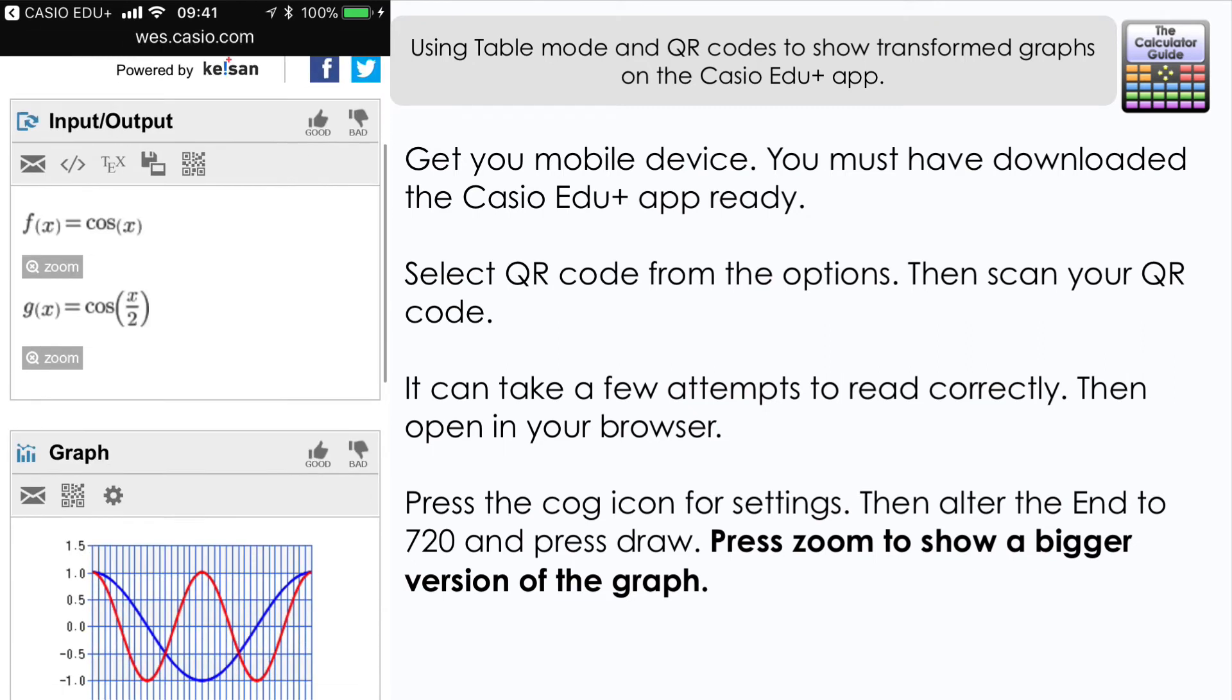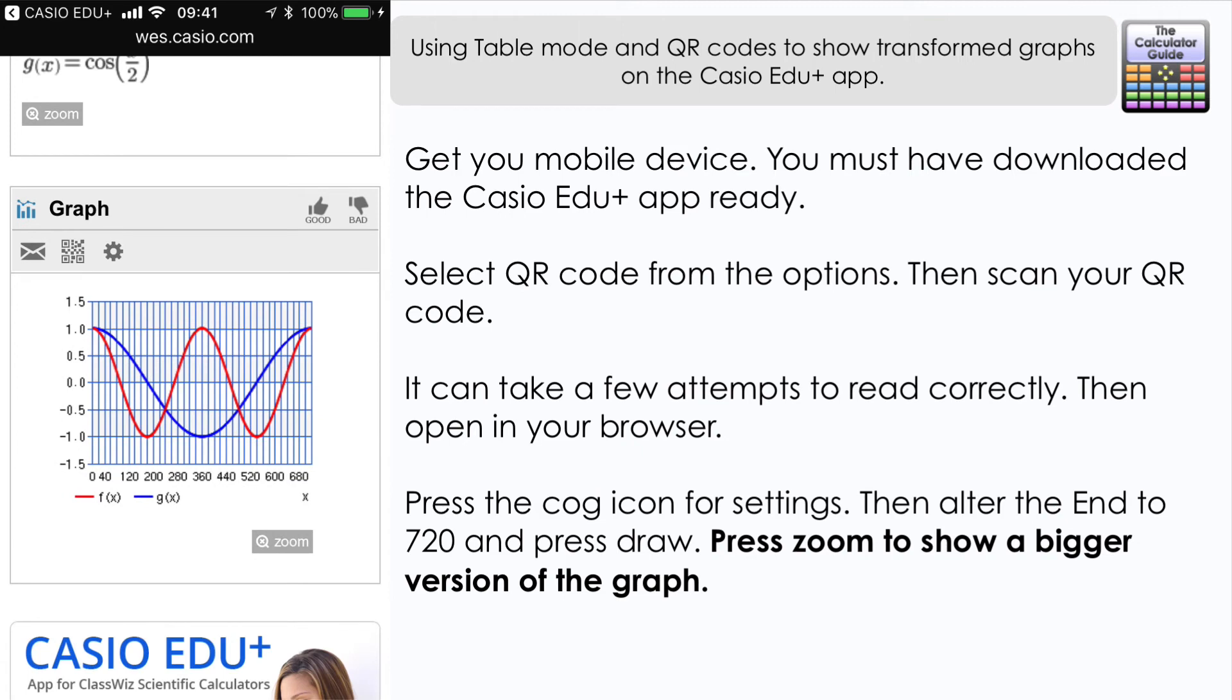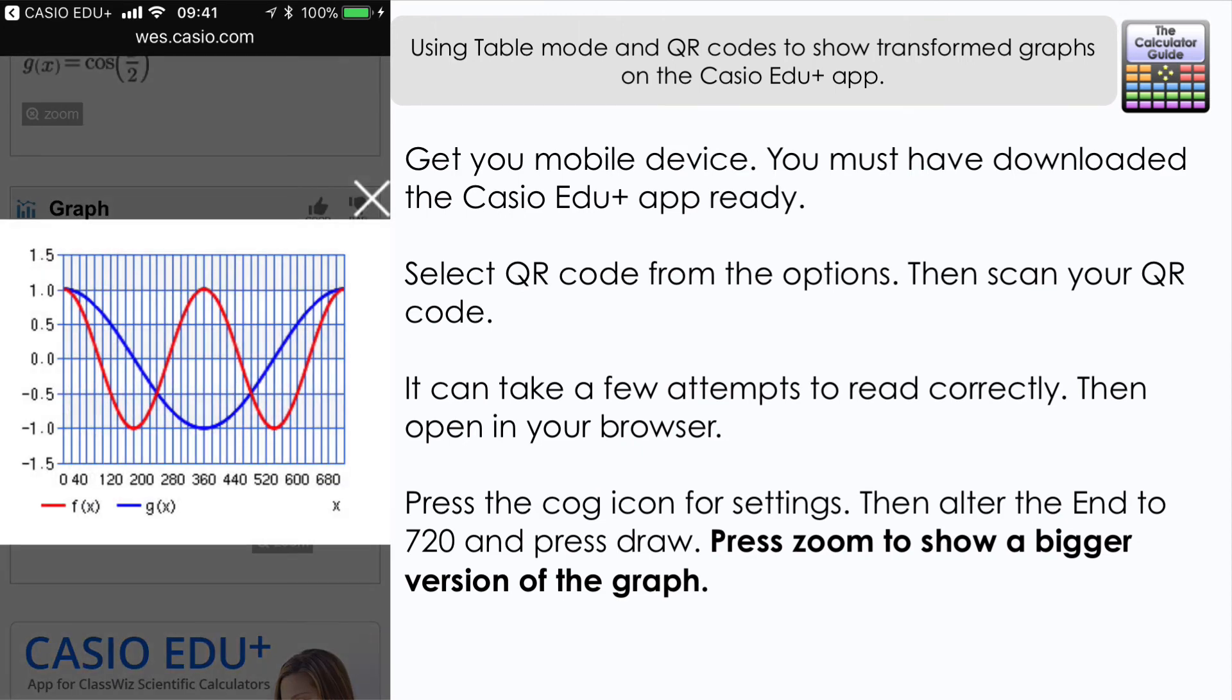So what have we got displayed here? Well f(x) was cosine x and we can clearly see we've got two complete waves of the cosine graph there going from 0 to 360 and then from 360 to 720. And in that same space g(x) which was cosine of x over 2 or a half x has just done one complete wave going from a start of 1 there back up to 1 in the space of 0 to 720.